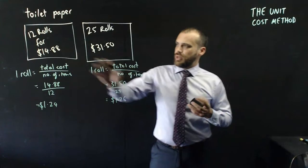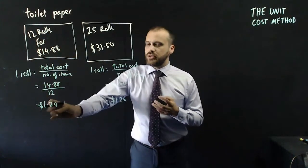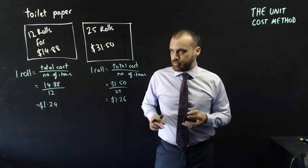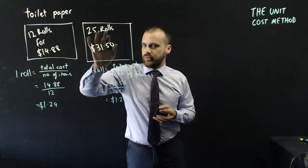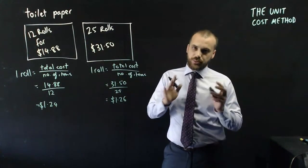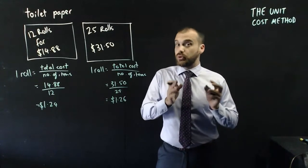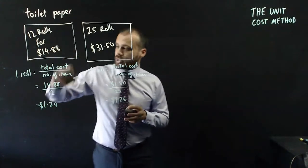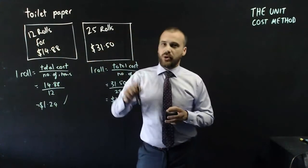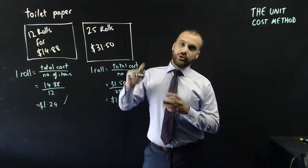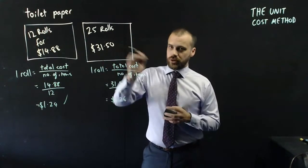What does this mean? Well, if you buy in packs of 12, you're paying $1.24 per roll of toilet paper. If you're buying in packs of 25, you're paying $1.26 per roll of toilet paper. You're a little bit better off buying this packet than you are buying this packet. You should always buy in packets of 12, not in packets of 25.